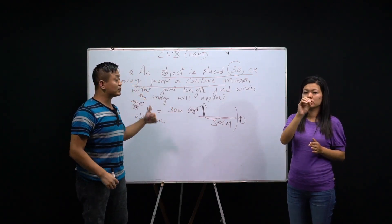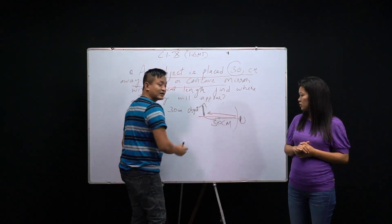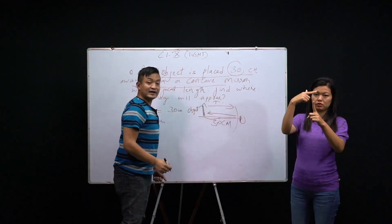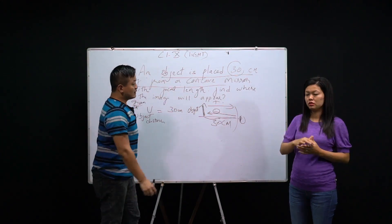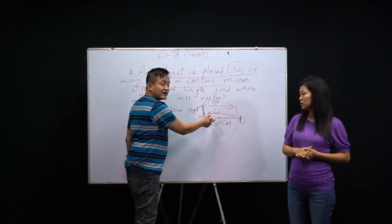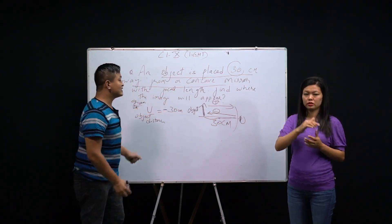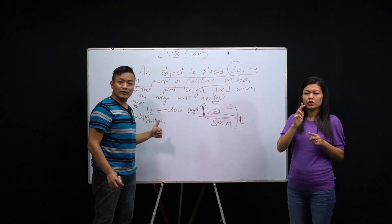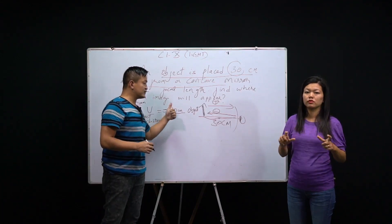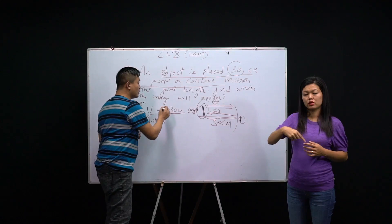Now what about the sign — would it be plus or minus? The direction towards the light is plus, but against it is minus. Since the object is on the left side, it goes against the direction of light, so u = -30 centimeters. Even if you know everything, a mistake in the sign will make the entire answer wrong. For any object — lens or mirror — object distance will always be minus.